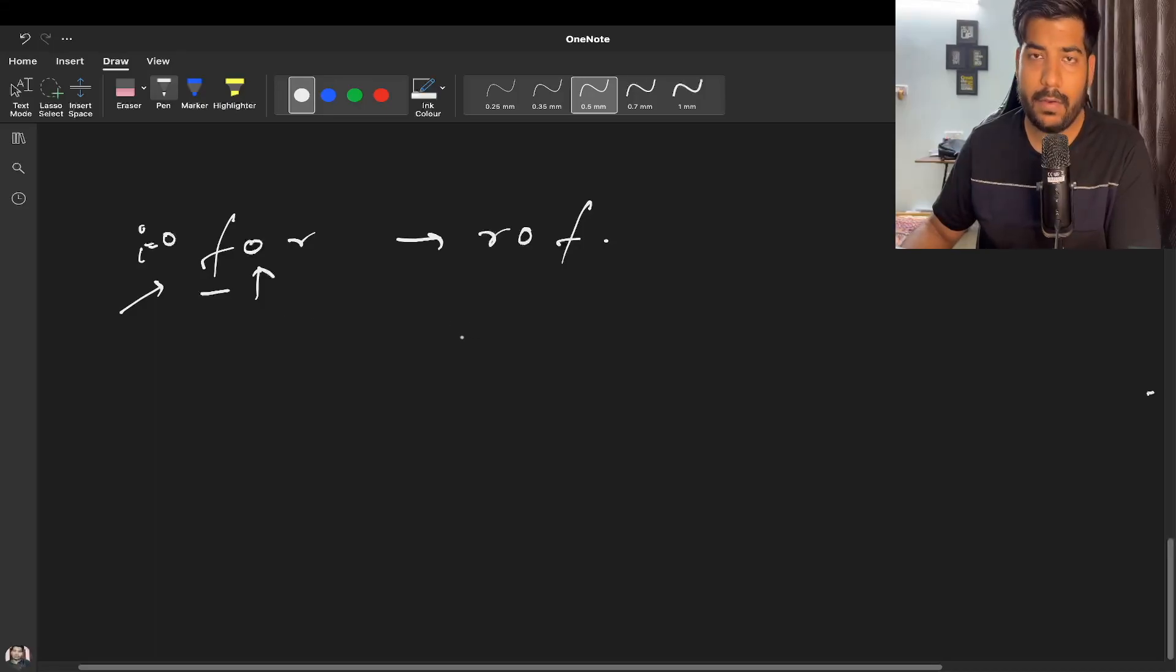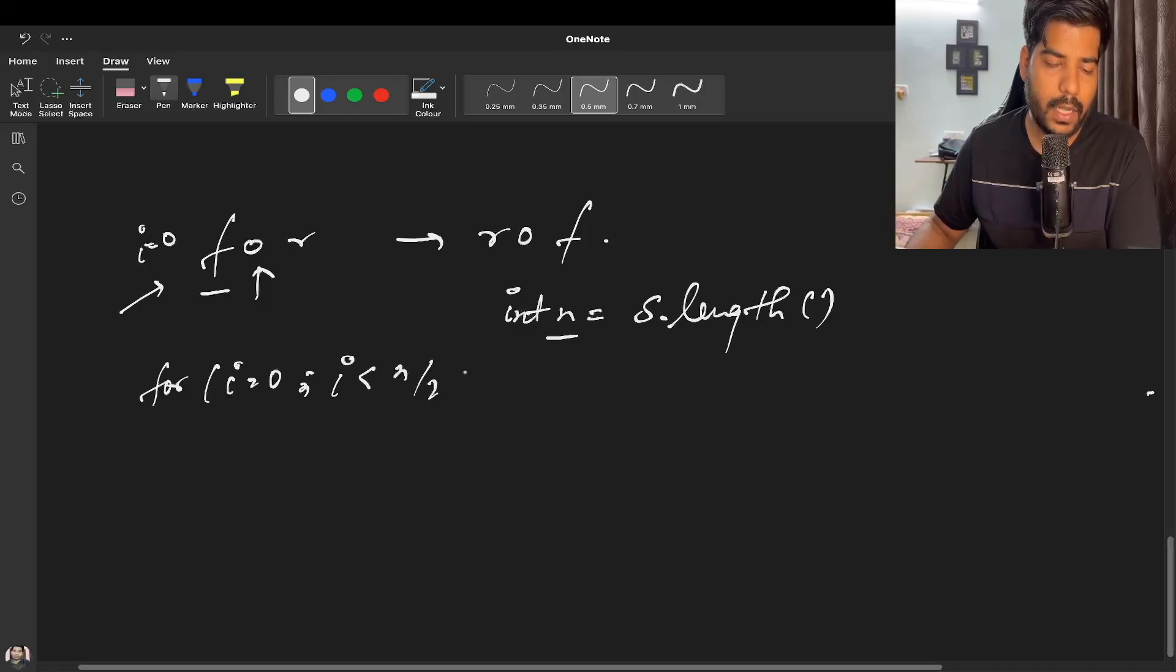How can we find the middle of the string? It's simple - we can store the length of the string in a variable n as s.length, so we don't have to calculate the length every time. Now we can use a for loop: for i equals zero, i less than n by two, and i plus plus.